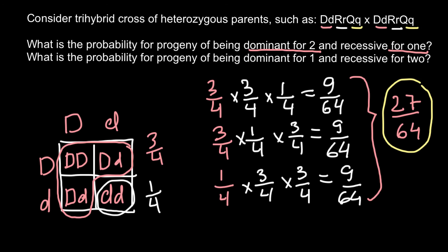For the second question — what is the probability of progeny being dominant for one and recessive for two — we follow the same rules and steps. This time, two out of three traits must be recessive. Let the first be recessive, the second recessive, and the third dominant. That gives one quarter times one quarter times three quarters, which equals 3 over 64.